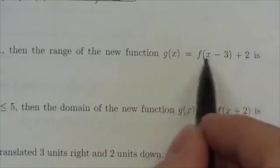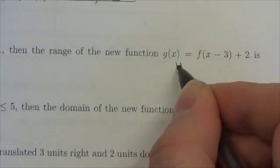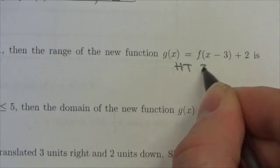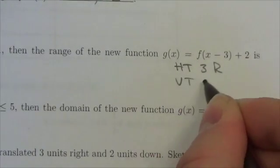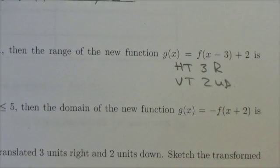Now we've got to identify what's going on here. This right here is a horizontal translation 3 to the right. This is a vertical translation 2 up.